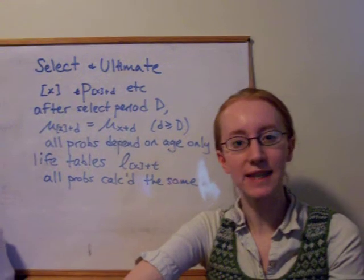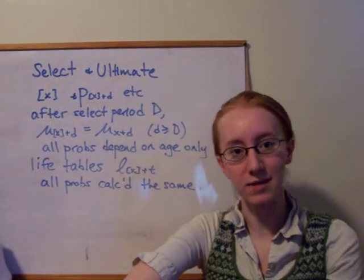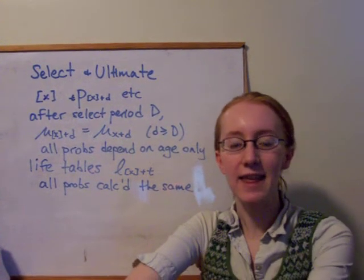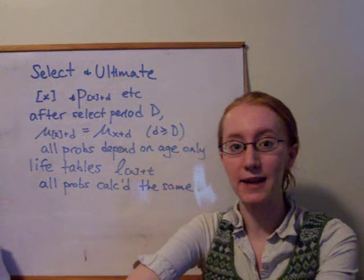And they're going to experience lighter mortality, so lower mu values, and of course then higher probability of surviving intervals, than an average person of that same age.